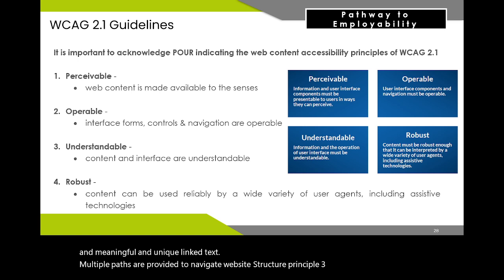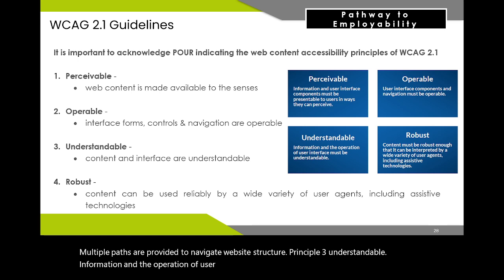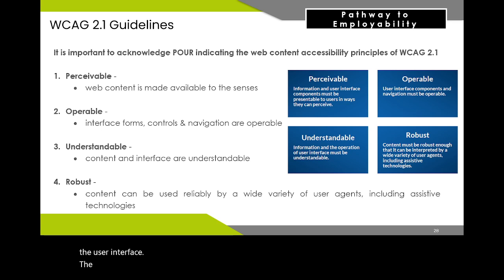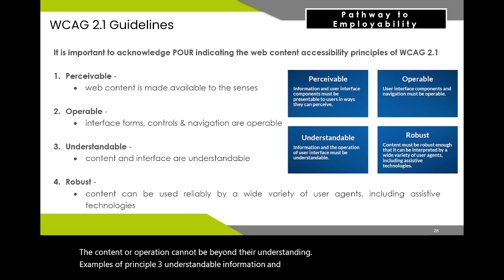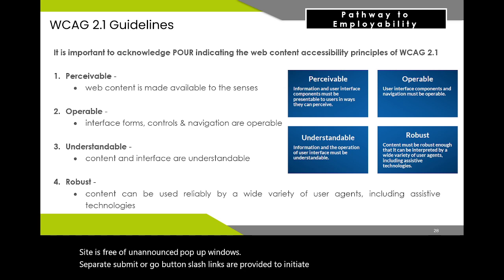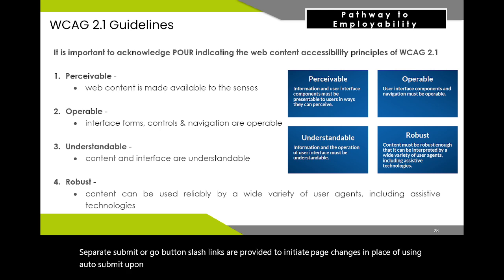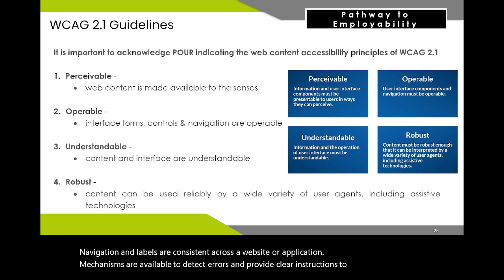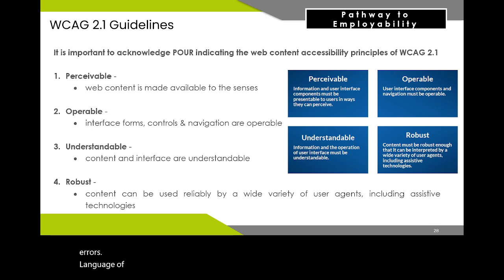Principle 3: Understandable — information and the operation of user interface must be understandable. Users must be able to understand the information as well as the operation of the user interface, and the content or operation cannot be beyond their understanding. Examples include: the site is free of unannounced pop-up windows; separate submit or go buttons are provided to initiate page changes rather than auto-submit upon selection; navigation and labels are consistent across a website or application; mechanisms are available to detect errors and provide clear instructions; and the language of text or subsection of text is identified.